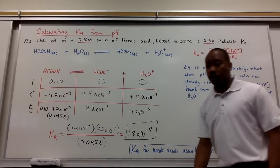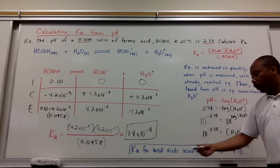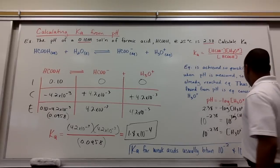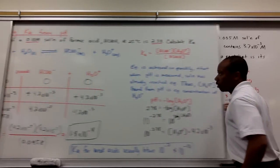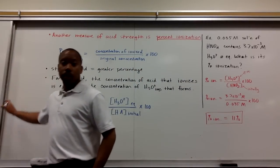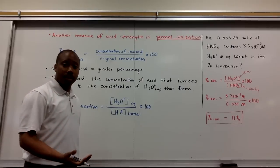One special note, the Ka for weak acids is usually between 10 to the negative 2nd and 10 to the negative 10th. Now, there's another way to measure acidic strength, really important for weak acids, and that is through something called percent ionization.